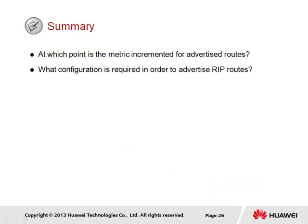This brings us to the summary for this section on RIP. The first review question asks at which point the metric is incremented for advertised routes. The metric of advertised routes is always incremented at the point of transmission from the outbound interface. Secondly, what configuration is required in order to advertise RIP routes? We are required to configure the network command followed by the network to be advertised. If there are multiple networks, each would require an individual network command to be configured for each network.